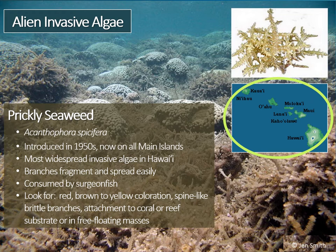Prickly seaweed was accidentally introduced to Hawaii in the 1950s and has since become the most widespread alien algae in the state, found on all of the main Hawaiian islands. It is highly adaptable and can survive in brackish fish ponds, tide pools, rocky intertidal benches, and shallow reef flats. Fortunately, this species is a favorite of surgeonfish and is rapidly consumed in areas with healthy surgeonfish populations. Its branches are easily fragmented, helping it establish a wide distribution, and where it grows, it can easily displace native species. To identify it, look for red, brown, to yellow coloration depending on light level, spine-like brittle branches, and attachment to coral or reef substrates or in free-floating masses.